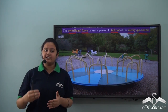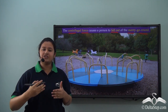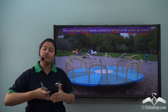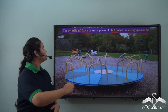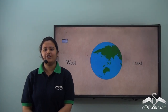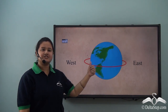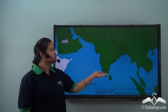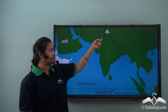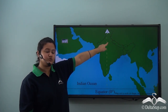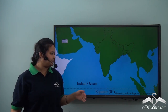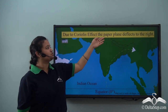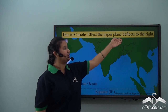Since the earth rotates on its axis, the ocean currents too have a tendency to deviate away from the earth's centre. We all know that earth rotates on its axis from west to east. So if you throw a paper plane from the mid of equator to the north, you would expect it to land exactly straight into the north in the state of Jammu and Kashmir. But this does not happen — the paper plane lands to the right. This happens due to the Coriolis effect, because of which the paper plane deflects to the right.